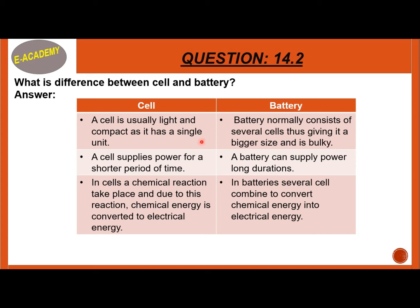A cell supplies power for a shorter period of time, while a battery can supply power for a longer duration. In a cell, a chemical reaction takes place and chemical energy is converted to electrical energy. In a battery, several cells combine to convert chemical energy into electrical energy.